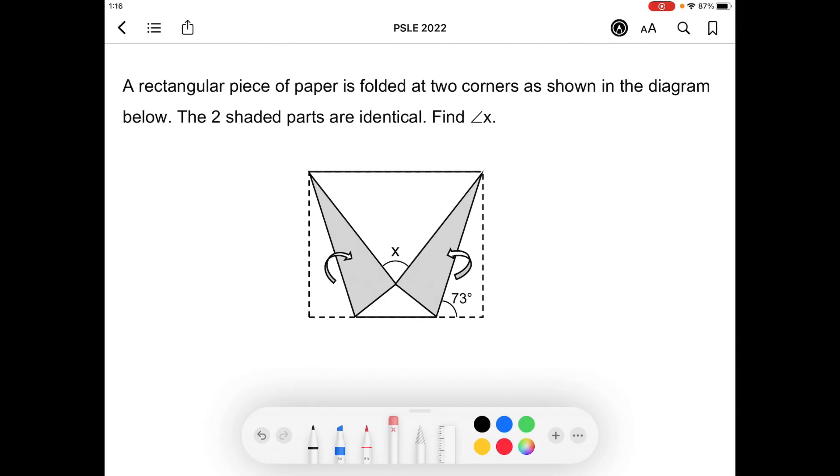A rectangular piece of paper is folded at two corners as shown in the diagram below. The two shaded parts are identical. Find angle x. The first thing is to identify that the corner of a rectangle is 90 degrees.